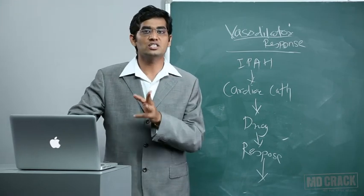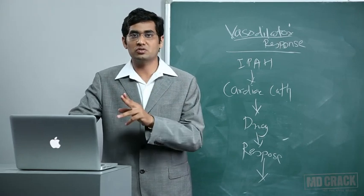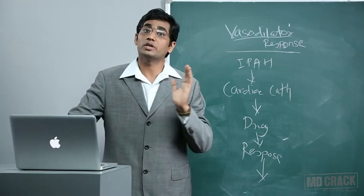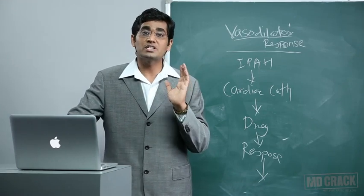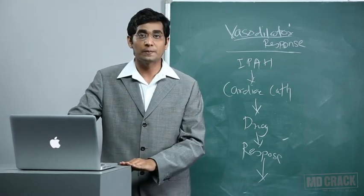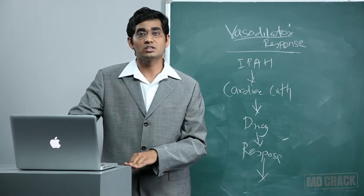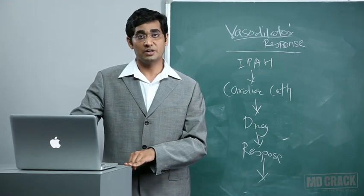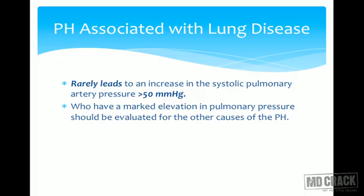In Category 2 (PVH) and Category 3 (lung disease-related PH), prescribing vasodilators will worsen the patient rather than improve them. So vasodilator drugs used in IPAH should not be prescribed in these categories. Pulmonary hypertension associated with lung diseases rarely causes systolic pulmonary artery pressure exceeding 50 mmHg.